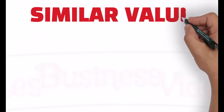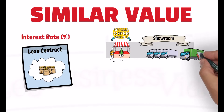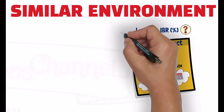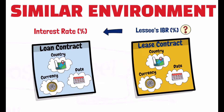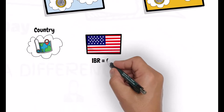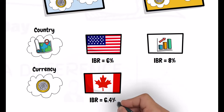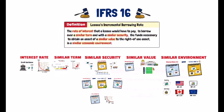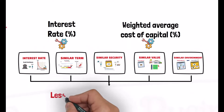A similar value to the right-of-use asset means that the interest rate the lessee should pay for the borrowing transaction should be for purchasing an asset that has the same value as the right-of-use asset. Similar economic environment means that the interest rate should be for a borrowing transaction executed in the same country, same currency, and on the same date the lease transaction is executed. For example, the rate for a lease executed in the United States would differ from the rate for a lease executed in any other developing country. Also, the rate for a lease in Canadian dollars would differ from the rate for a lease in euros. The lessee's incremental borrowing rate is therefore not simply the interest rate on a bank loan or the weighted average cost of capital, unless these rates are adjusted to reflect all these factors.